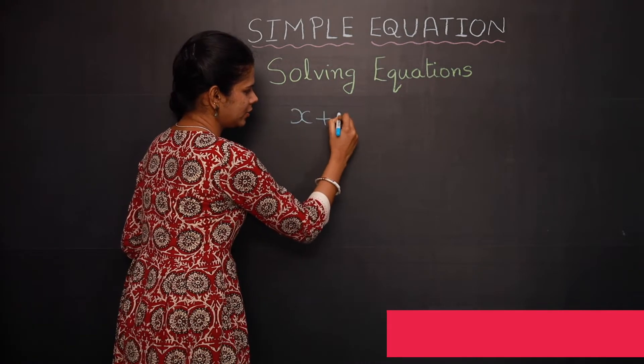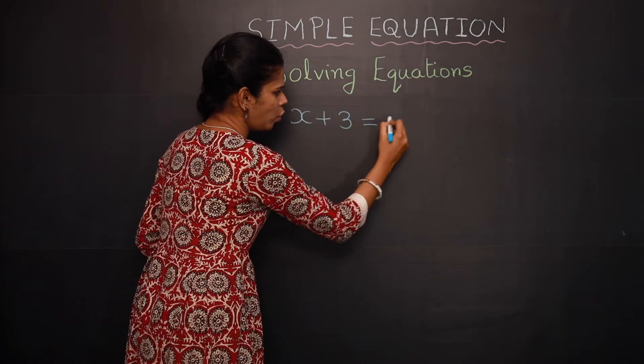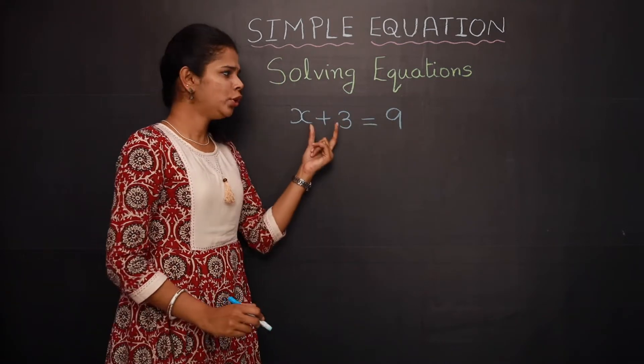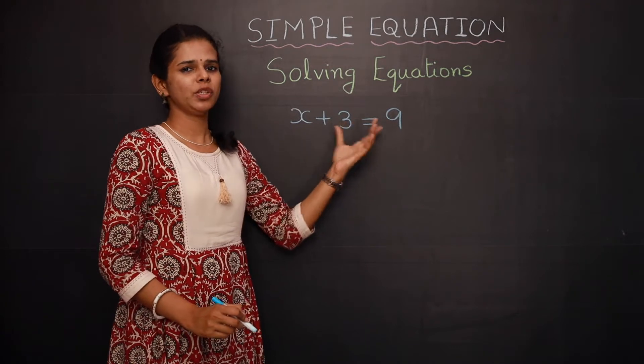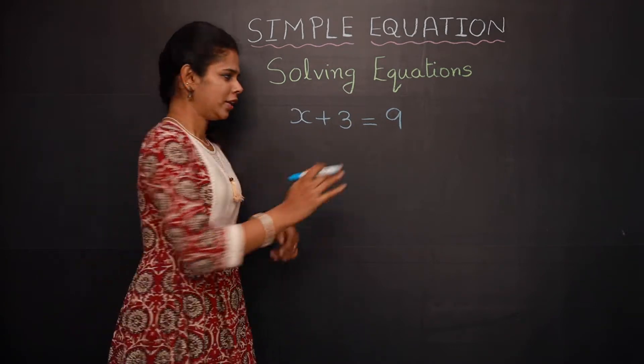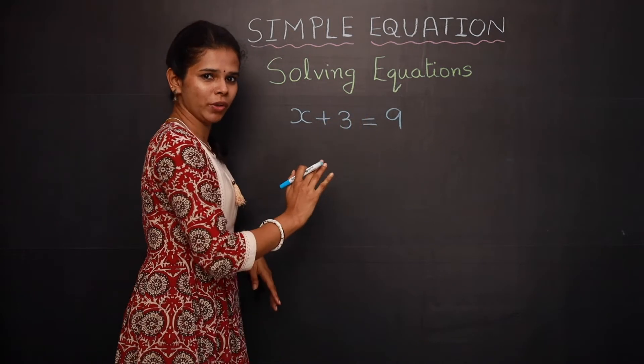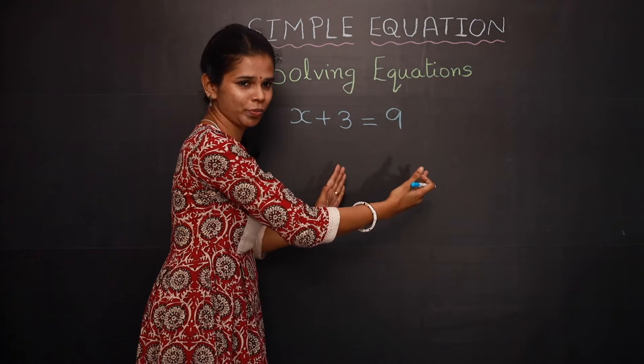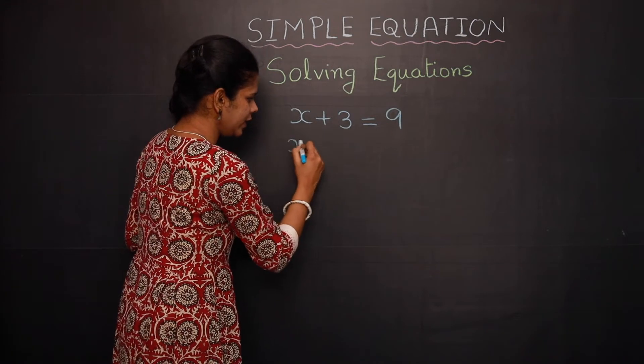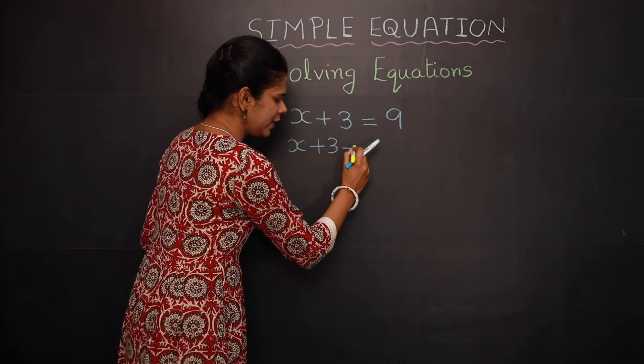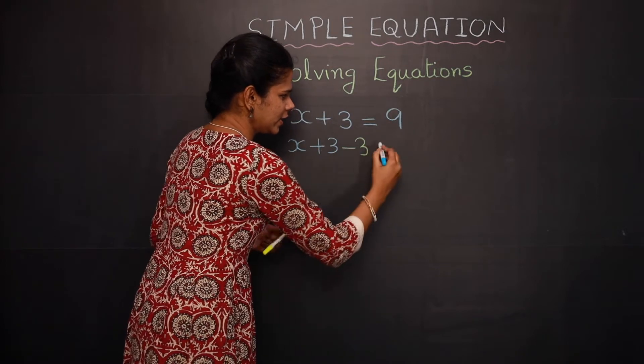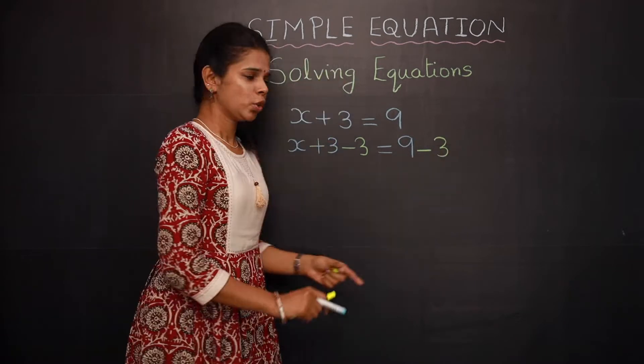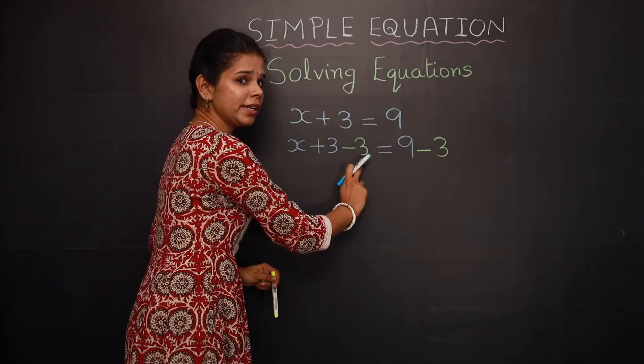x plus 3 equal to 9. This is one equation and you need to separate the variable and find the solution of this equation. You need to subtract 3 here, then it will be removed. So whatever we are doing on one side, you should do the same thing on the other side. So here x plus 3 minus 3 is equal to 9 minus 3.